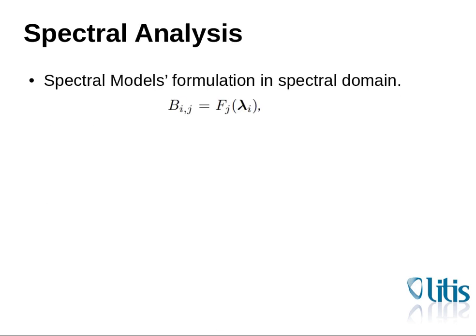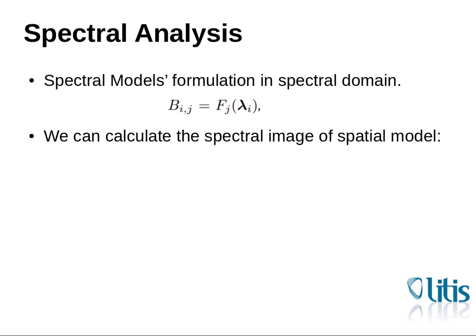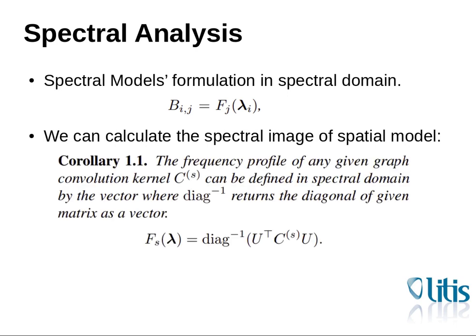To do spectral analysis of spectral GNN model, we just need to equivalent form of convolution in B matrix parameterization form. For spatial GNN, we can use this corollary, which is the inverse eigendecomposition of given convolution support.